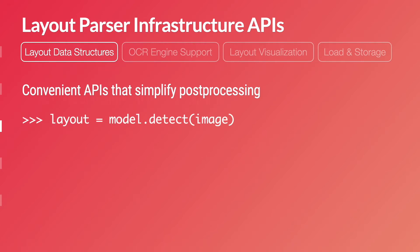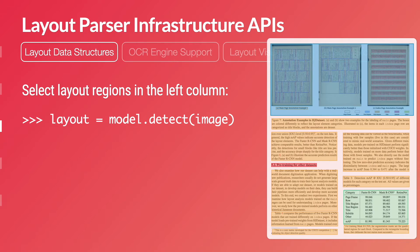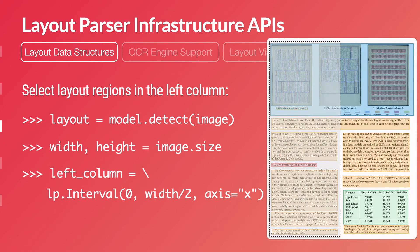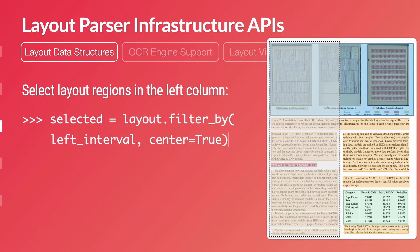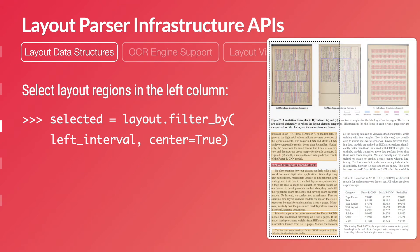For example, let's say we want to select the layout regions in the left column — a very common DIA task that is straightforward to implement using Layout Parser. First, you get the image sizes, then create an interval object that denotes the left column. We implement the filter-by API that can easily select all layout regions whose centers are inside the left column. And finally, you can even sort the boxes vertically to get the correct reading order.